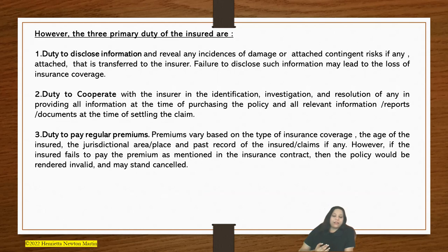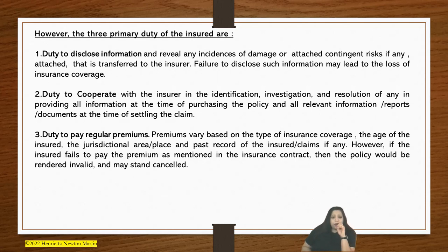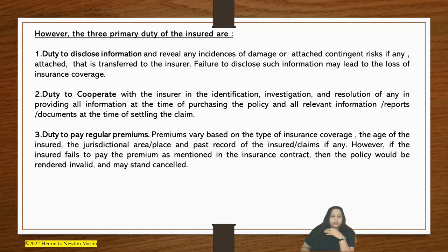The three primary duties of the insured are: first, duty to disclose information — all information pertaining to the property, including any risks that may be involved and any risks that may be transferred to the insurer, has to be revealed. Failure to disclose such information amounts to breach, and the insurer may end up losing the insurance coverage.